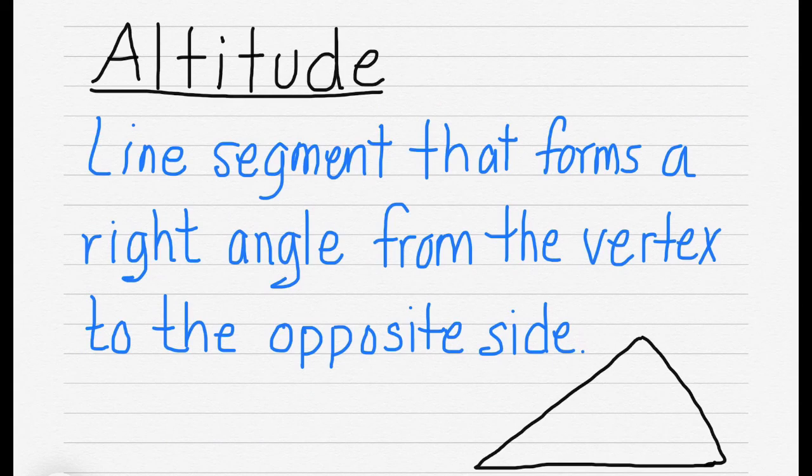The altitude is a line segment that forms a right angle from the vertex to the opposite side. The important part is this is a right angle. So you're starting at the vertex and going to the opposite side, and it creates a 90 degree angle, a right angle.